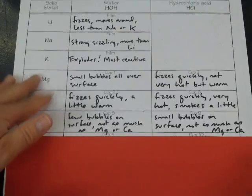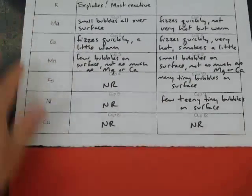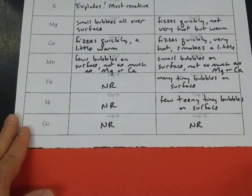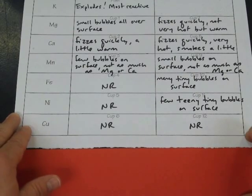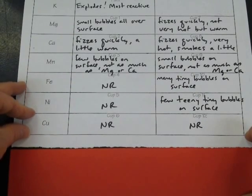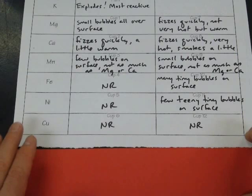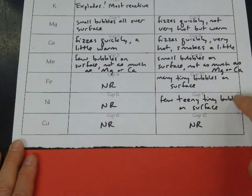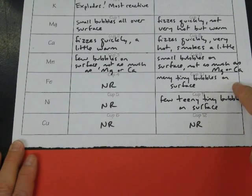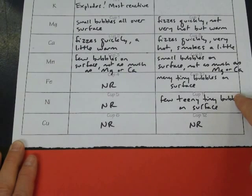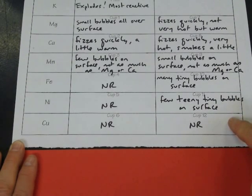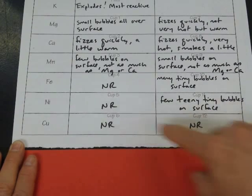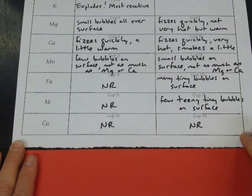Looking at the last three metals: when iron, nickel, and copper were combined with water, they didn't react at all. So as a group, these three metals are less reactive than the others. But between them, iron showed it reacted more than nickel or copper — it had many tiny bubbles on the surface in the acid. There were fewer tiny bubbles on the nickel, so it didn't react as much as the iron. And the copper had no bubbles at all. Copper is the least reactive of all the elements tested.